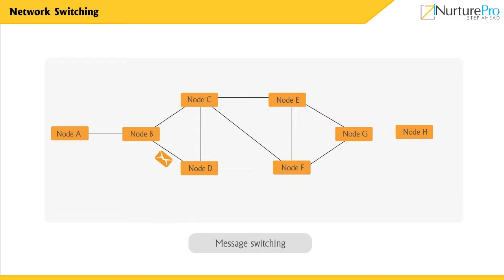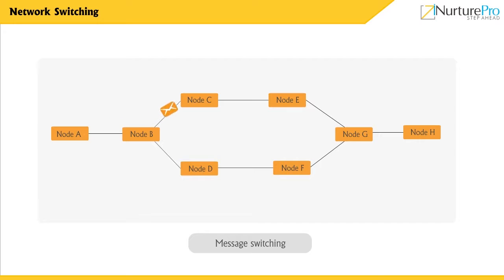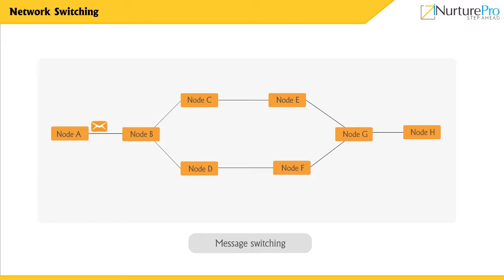Message switching is referred to as store and forward switching, since each connecting device receives the message and stores it in the device buffer memory until the next device is ready to receive it. Message switching does not use a dedicated pathway for communication. In this type, each message is treated as an independent unit and includes its own destination address. The shortest route and information about nearby switches are programmed in the switch itself. It takes more time, therefore message switching is not recommended for real-time applications.